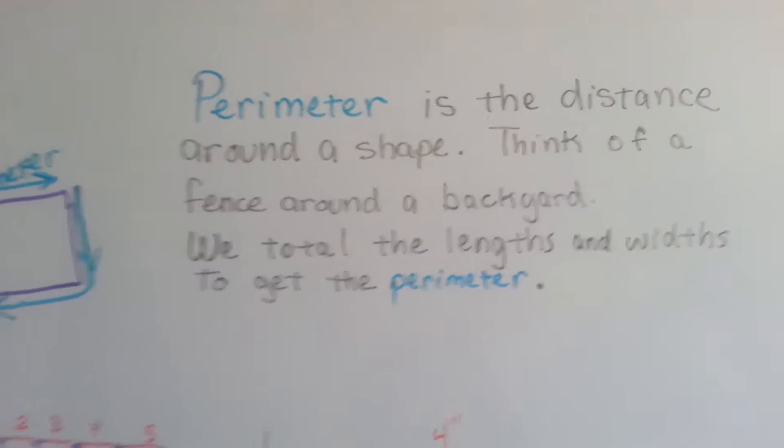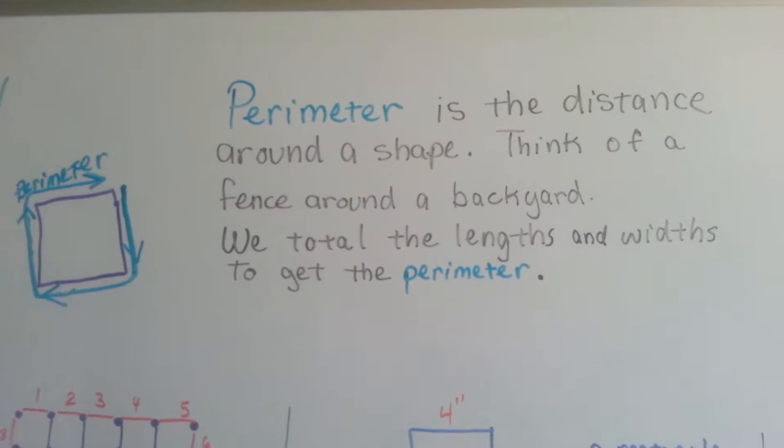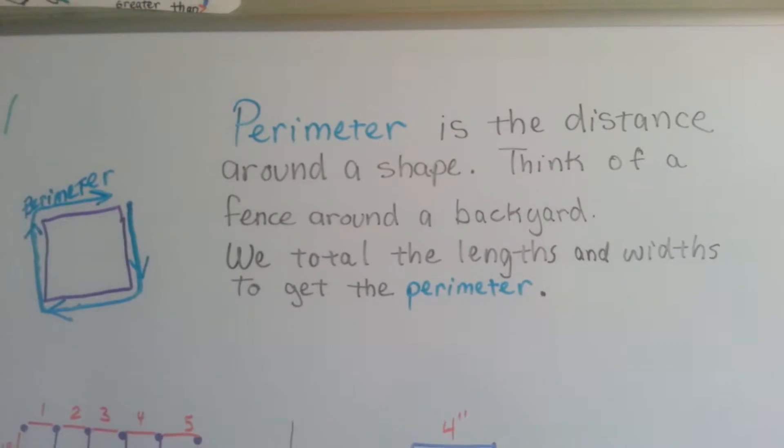Perimeter is the distance around a shape. Think of a fence around a backyard. We total the lengths and widths to get the perimeter.